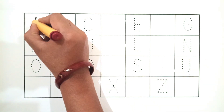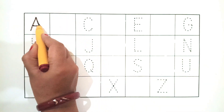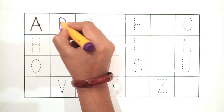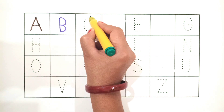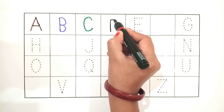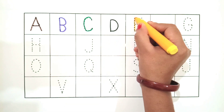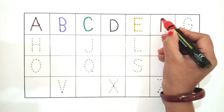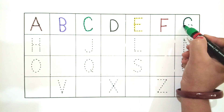Hello Batcha! A for Astronaut, B for Bed, C for Crow, D for Dolphin, E for Egg, F for Flower, G for Giraffe.